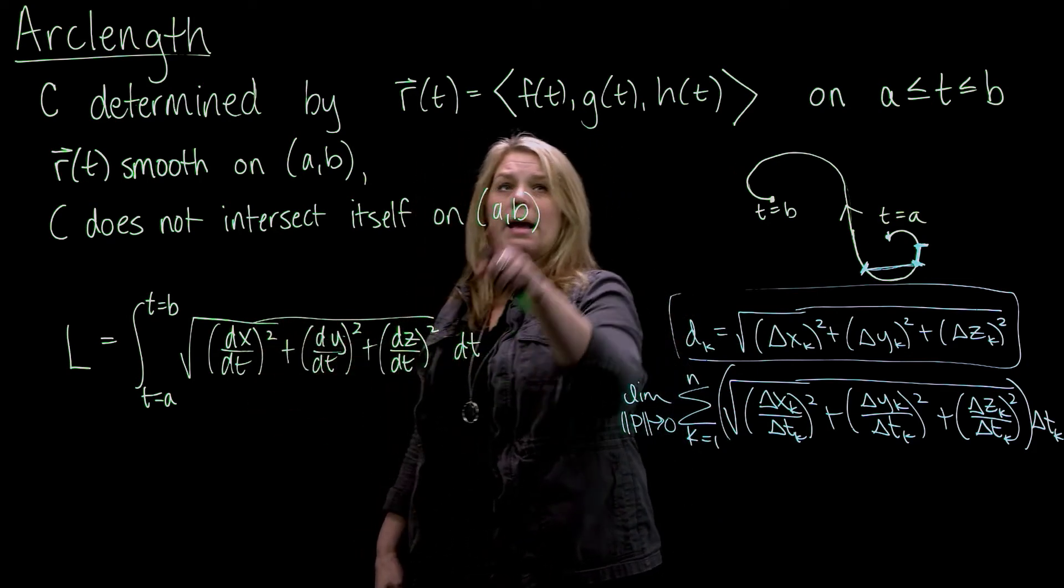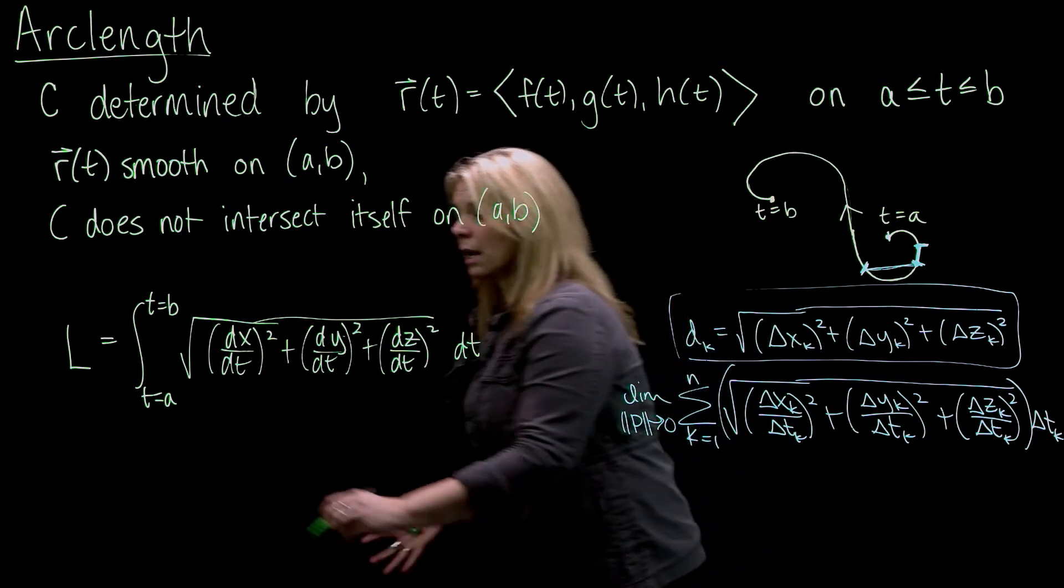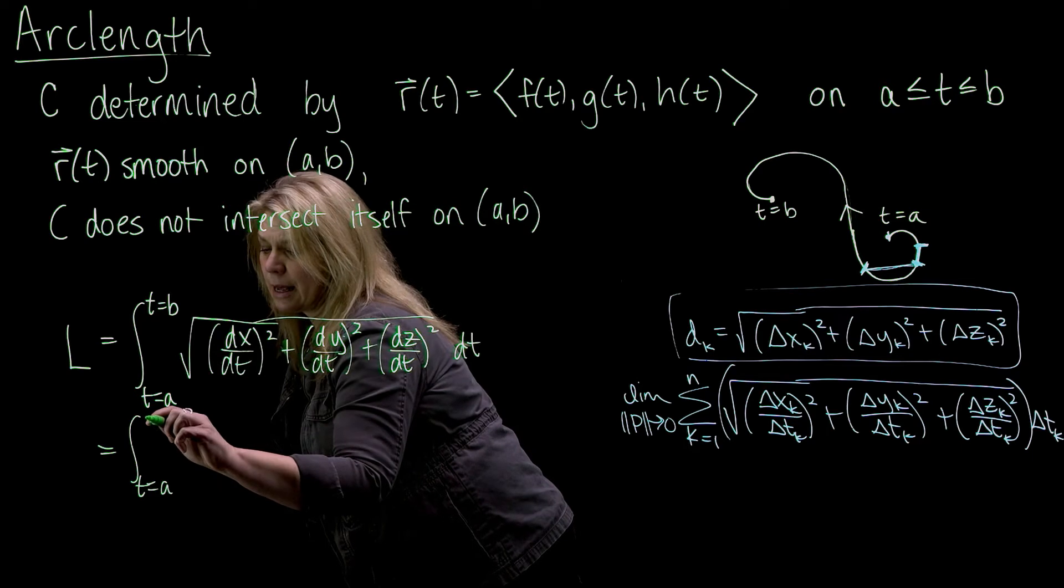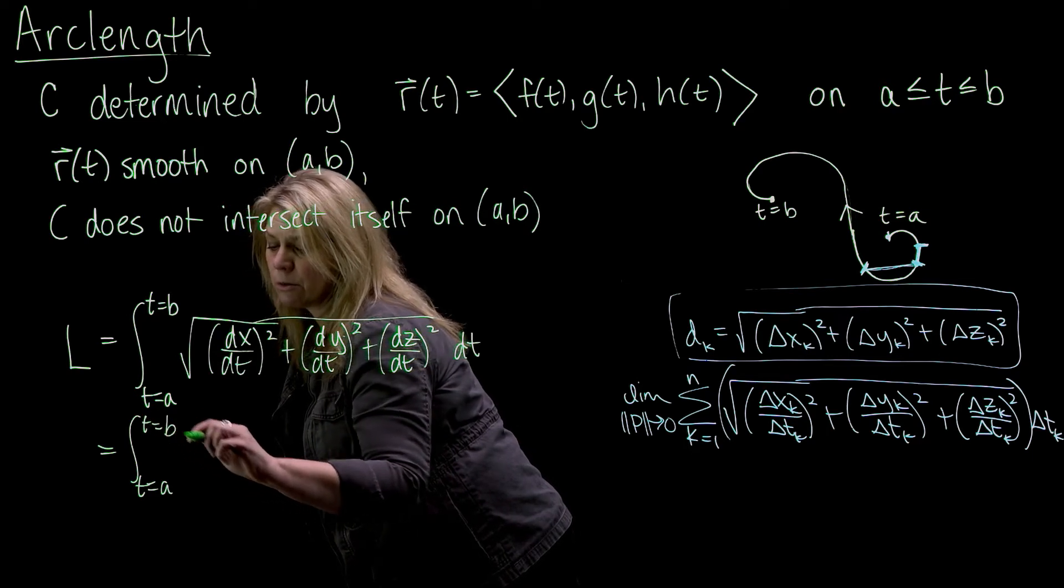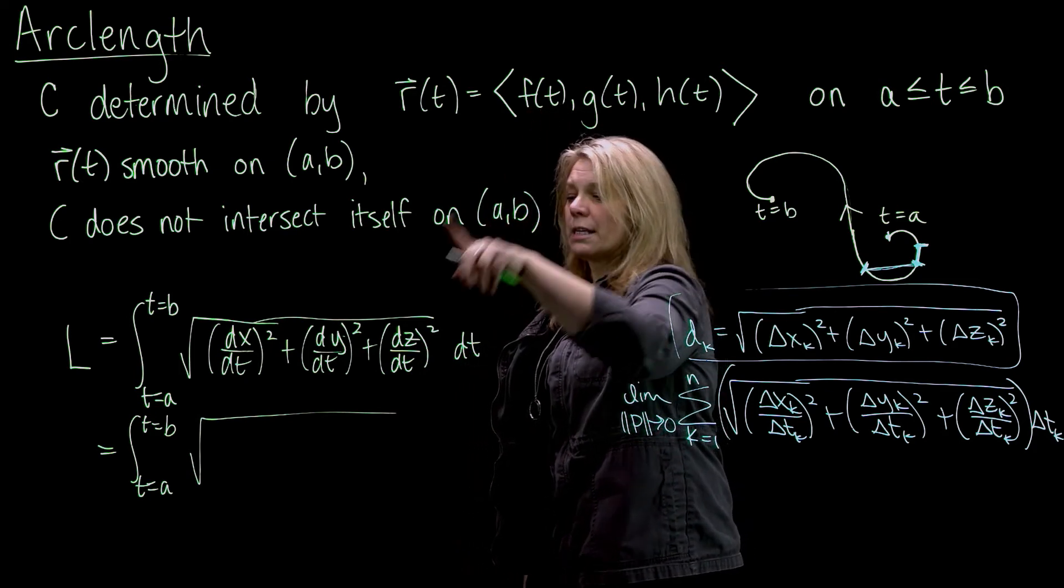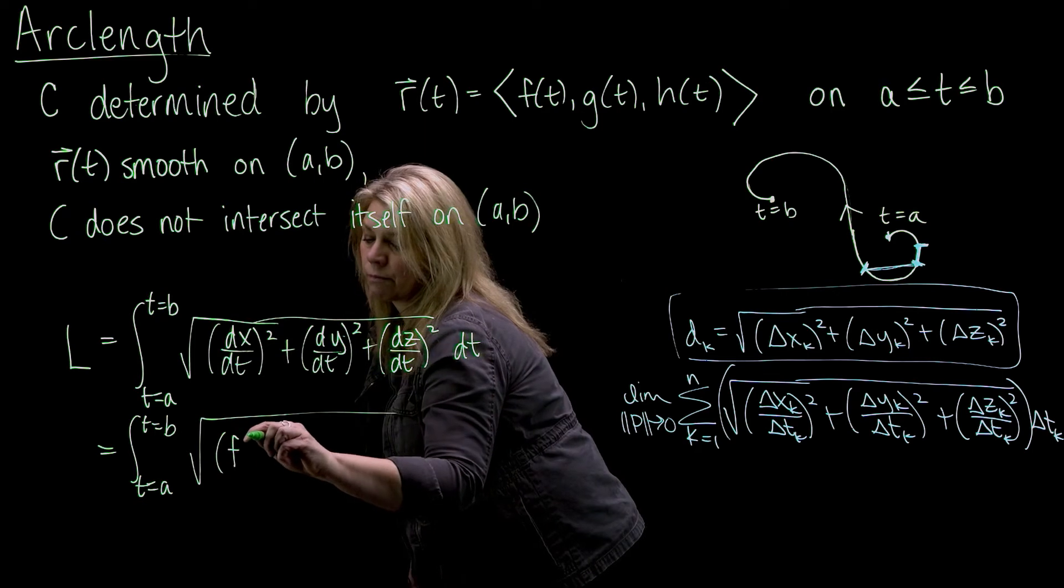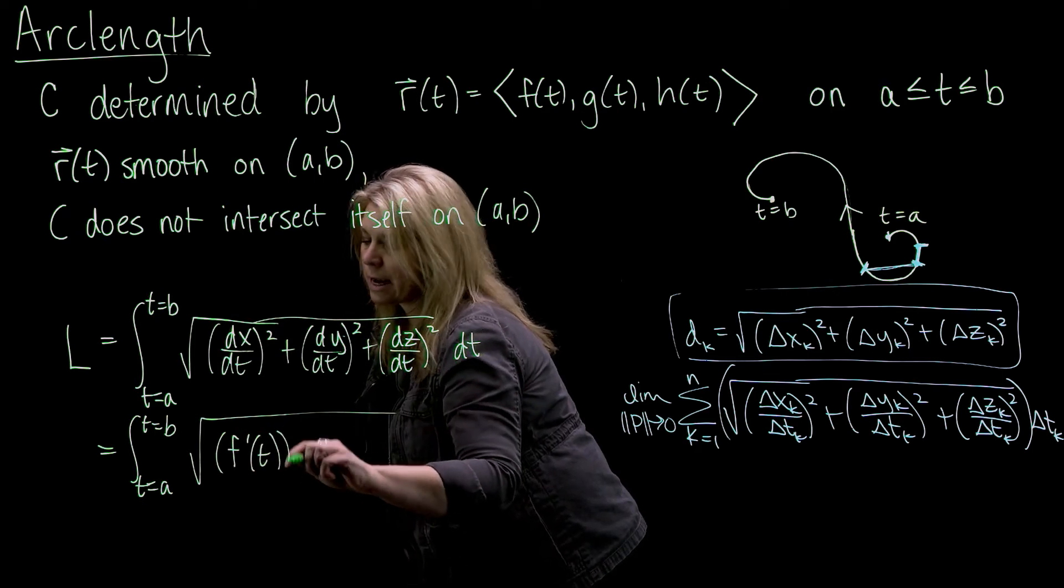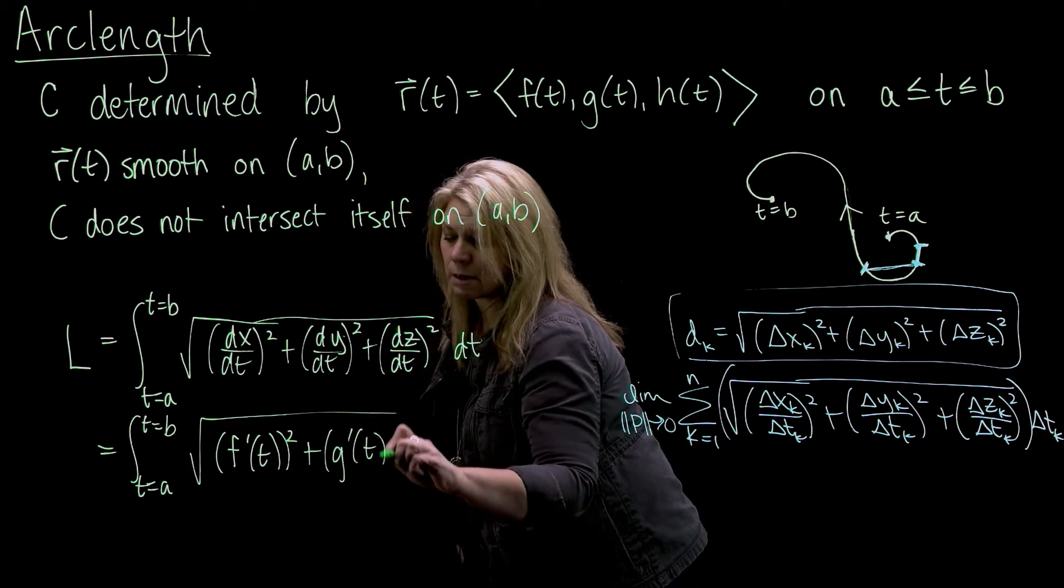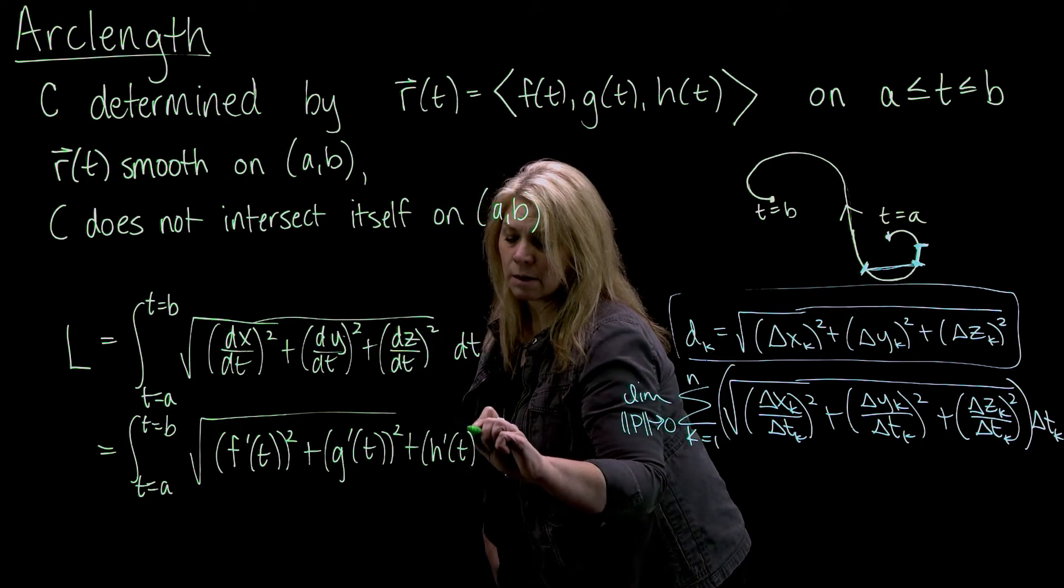You might also see it written, I think our textbook likes to write it like this, from t equals a to t equals b square root of. So if x is f of t, then dx dt would be f prime of t. This is just different notation for the same thing. Squared plus g prime of t squared plus h prime of t squared.